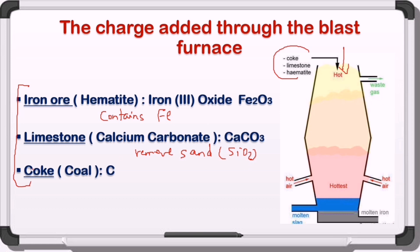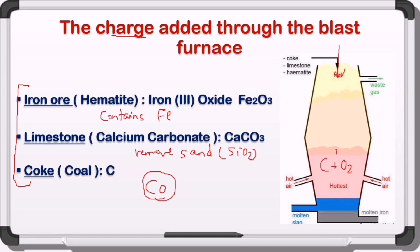Finally, here we have coke, coal, or carbon. This is the reducing agent, which will be changed into carbon monoxide through the reactions. Once the charge is added to the top of the furnace, the reaction starts between coke and hot air — oxygen — to produce carbon dioxide gas.